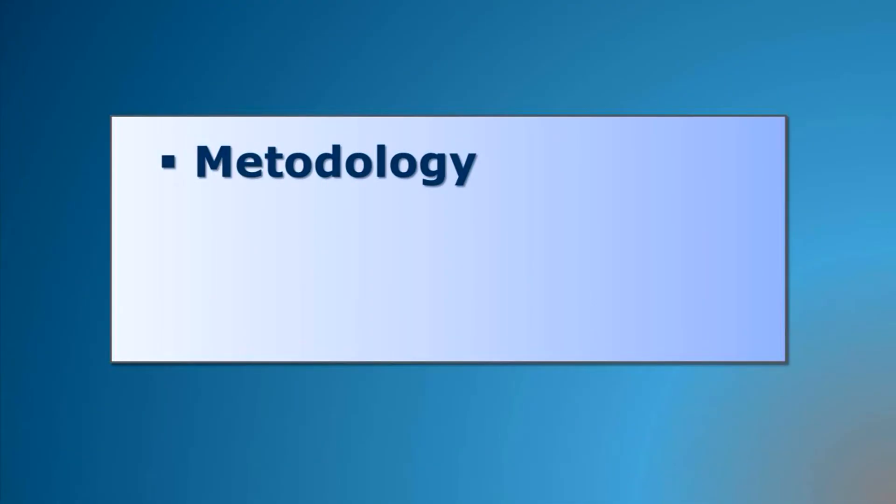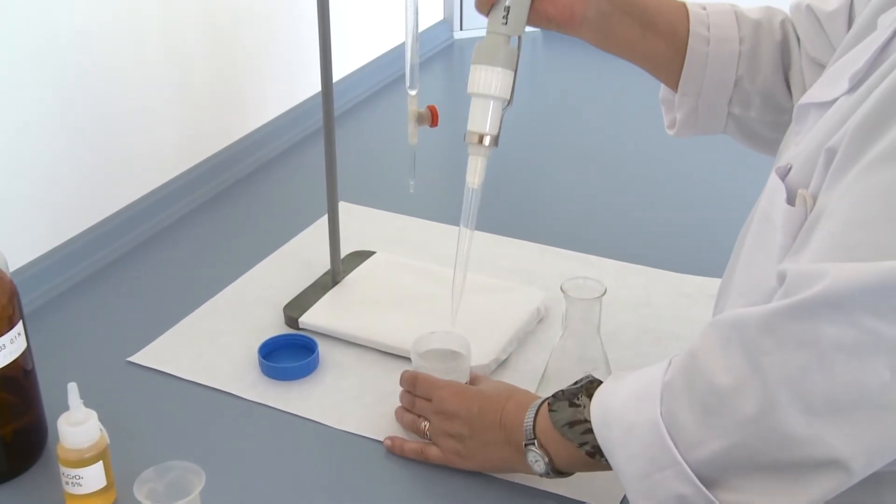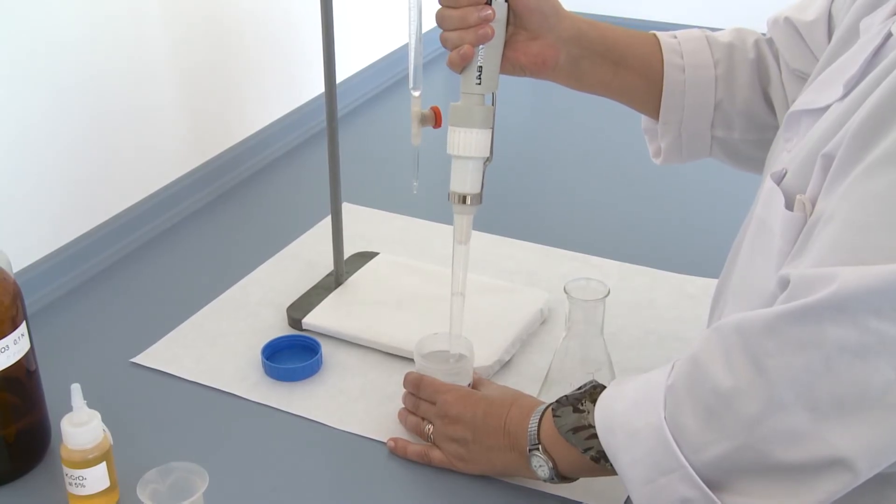Methodology. Measure with a pipette 10 ml of water sample and pass it to a 250 ml Erlenmeyer flask.